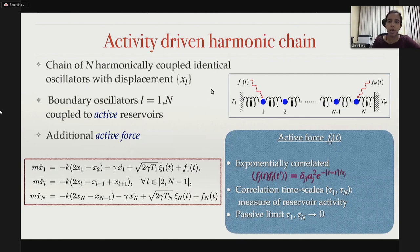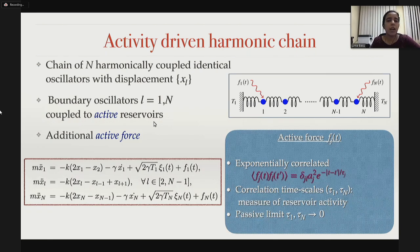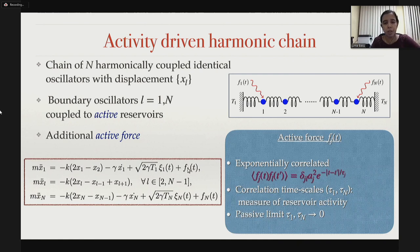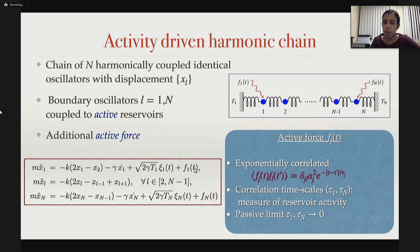Let me define the model more precisely. As before, we have a chain of N harmonically coupled oscillators, with displacement x_l for the l-th oscillator. The boundary oscillators at l=1 and l=N are coupled to active reservoirs. We model these by adding an extra active force f_1 and f_N that does not satisfy the fluctuation-dissipation theorem and has a memory. Apart from the usual thermal noise (constant dissipation and white noise xi_1 and xi_N at the two ends), these active forces f_1 and f_N are exponentially correlated, giving the system a non-Markovian nature. Crucially, because they are independent of dissipation, they do not satisfy any fluctuation-dissipation theorem, making the reservoirs themselves out of equilibrium.